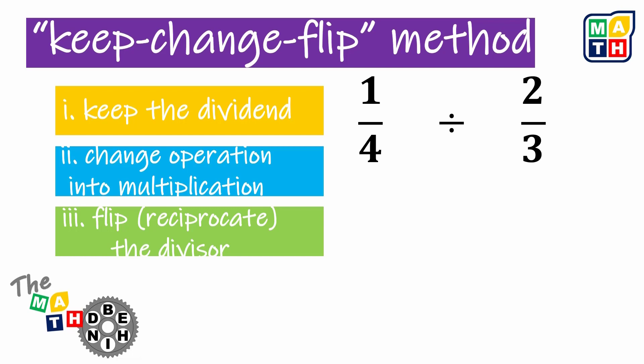Now that we are clear with this, let us proceed with the steps for the Keep Change Flip method. First, let us keep whatever the dividend is. In short, let us still use 1 fourth.